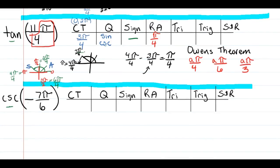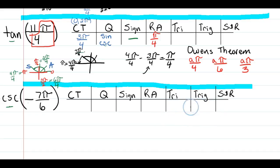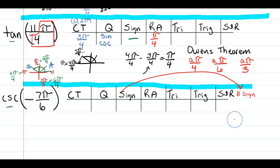Use this shortcut now for cosecant of negative 7π/6 and determine what the reference angle would be. Tomorrow we'll look at how to select our reference triangle, what the trig relationship is, and how to get our final answer — simplified, rationalized, and with the correct sign. We'll also look at angles like π/2 and 3π/2 and get additional practice on those.